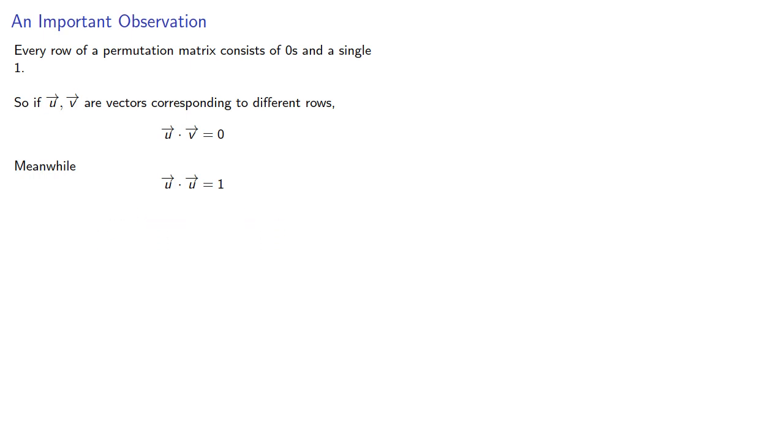Since the product of a matrix and its inverse should be the identity matrix, which means that all of the entries should either be zero or one, this suggests that if we could multiply the rows of the permutation matrix by other rows of the permutation matrix, we might get the identity.